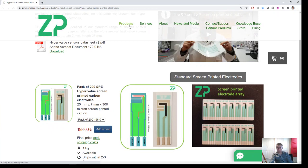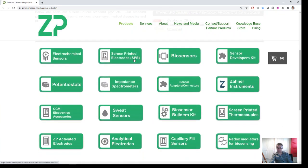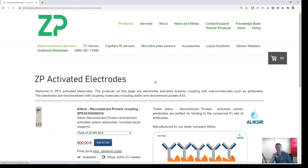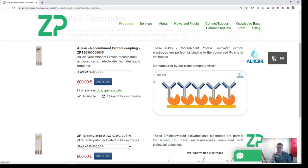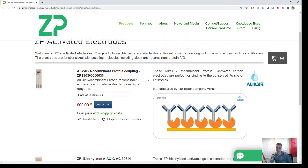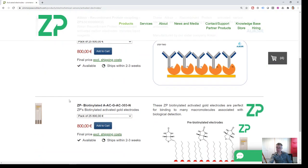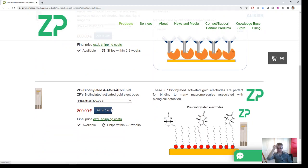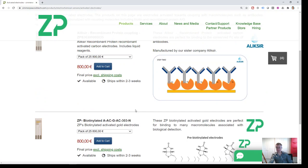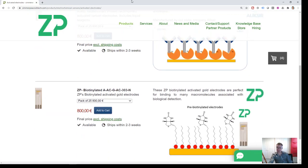It's probably worth saying as well, this is more relevant to maybe people in industry rather than maybe academia. In academia, I respect the fact that people like to build sensors from the ground up. But if you're in industry, there may be, we do do what's called activated electrodes where the electrodes are already activated to coupling with an antibody. And we have a carbon version and a gold version of those.